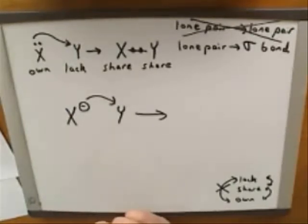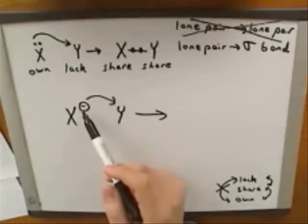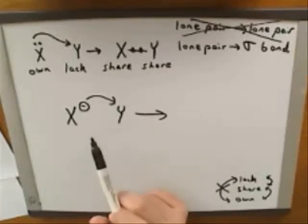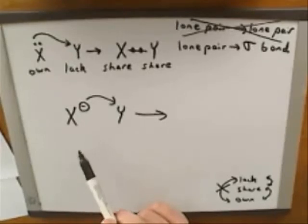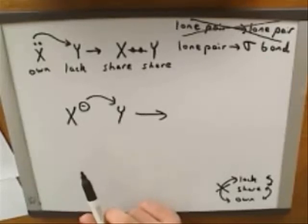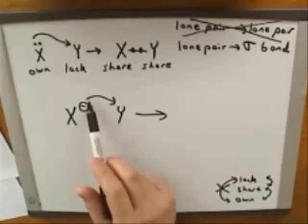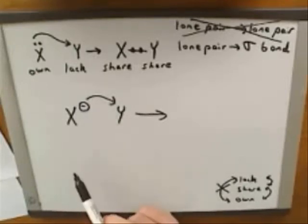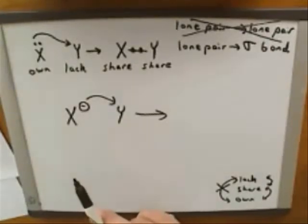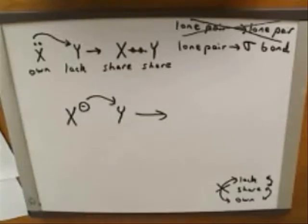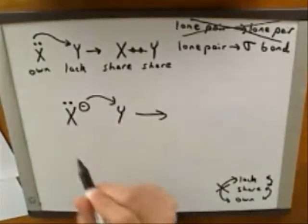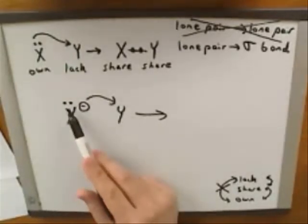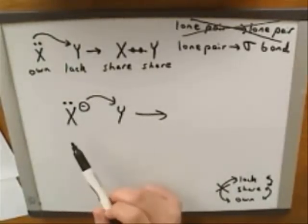The answer is there really isn't any important difference. The convention in organic chemistry is that if you put the tail of an arrow on a negative charge, that really means that the electrons are coming from a lone pair. So in this case, the tail of the arrow really is on a lone pair, even though we haven't drawn that lone pair. It's conventional in organic chemistry not to draw lone pairs in many cases. So I'm going to go ahead and draw that lone pair in to clarify what's happening.